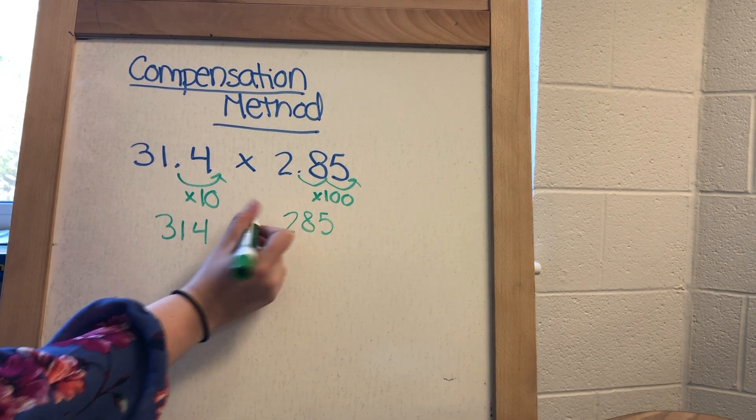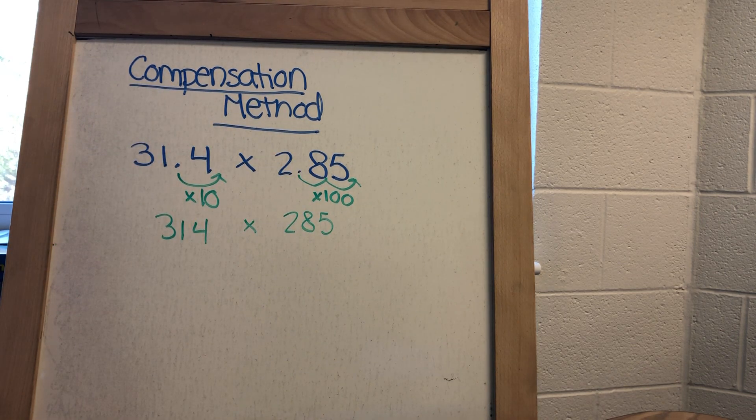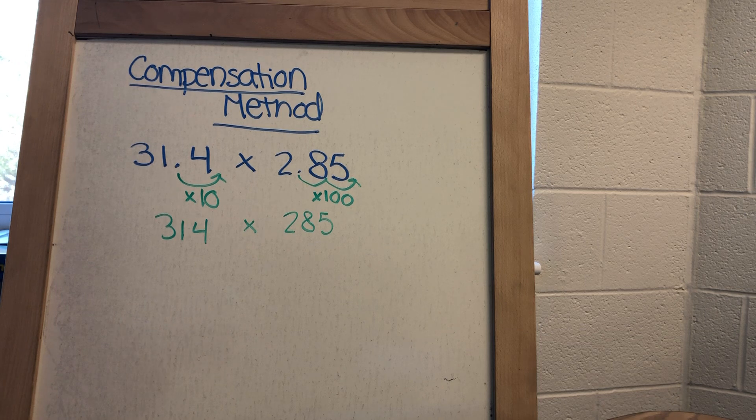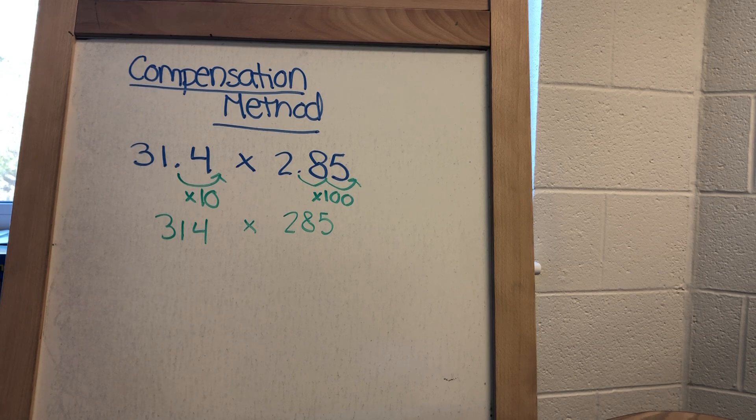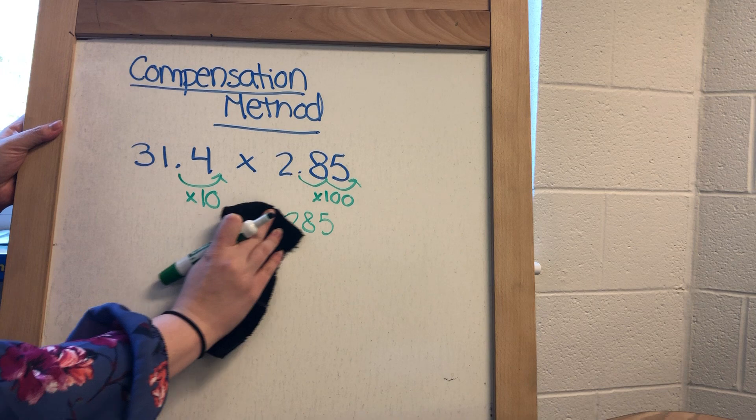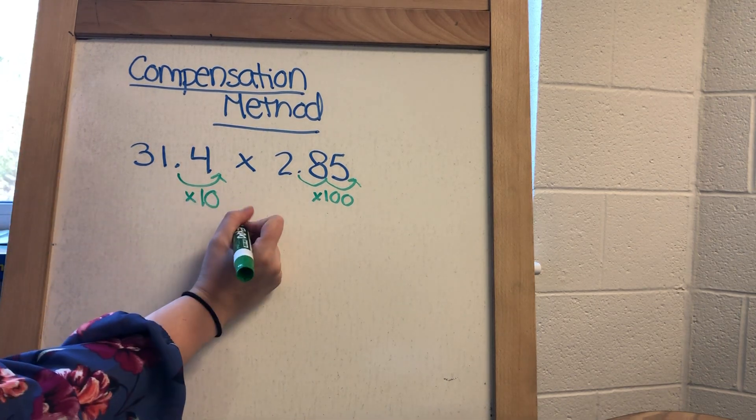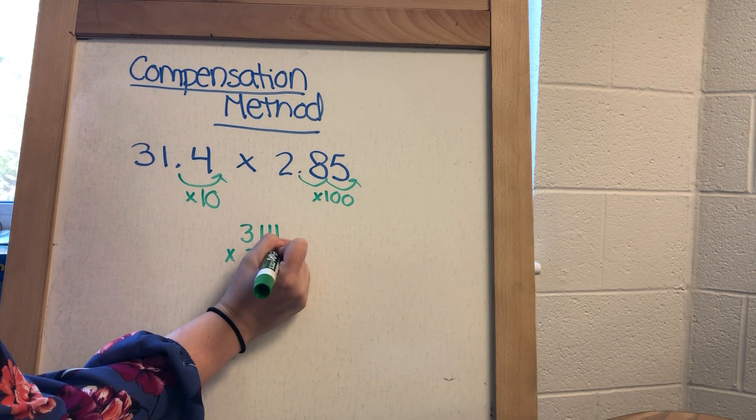So essentially what you're doing is making these numbers whole numbers so that they're easier to multiply. So then from here, you're going to set up a regular multiplication problem. So I am going to go ahead and, just so I have room, I'm going to make this 314 times 285.